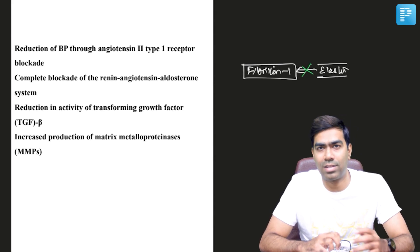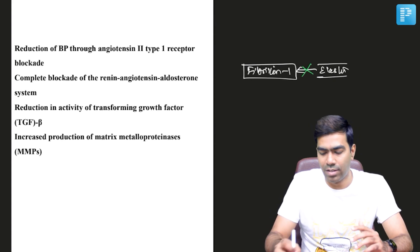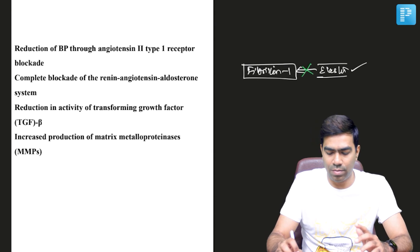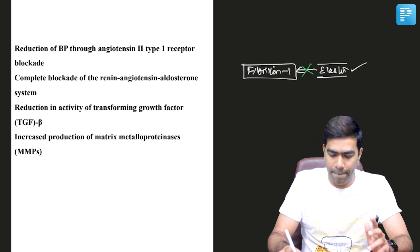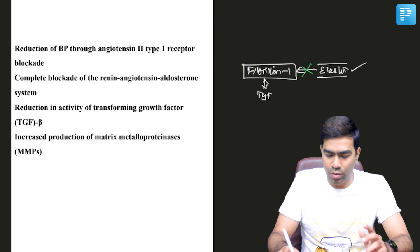That will result in problems in the areas that require elastin, like heart valves or blood vessels, especially the arteries. Second, fibrillin-1 also attaches to another molecule called TGF-beta.